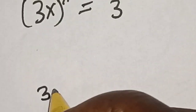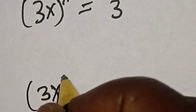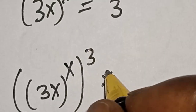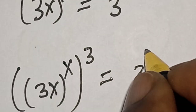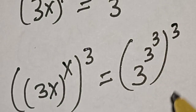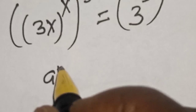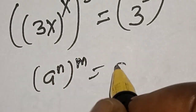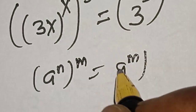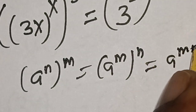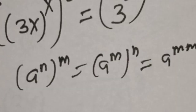So we have 3s raised to power s raised to power 3, is equal to 3 raised to power 3 raised to power 3 raised to power 3. Remember this rule: if you have a raised to power n raised to power m, it equals a raised to power m raised to power n, which equals a raised to power mn.